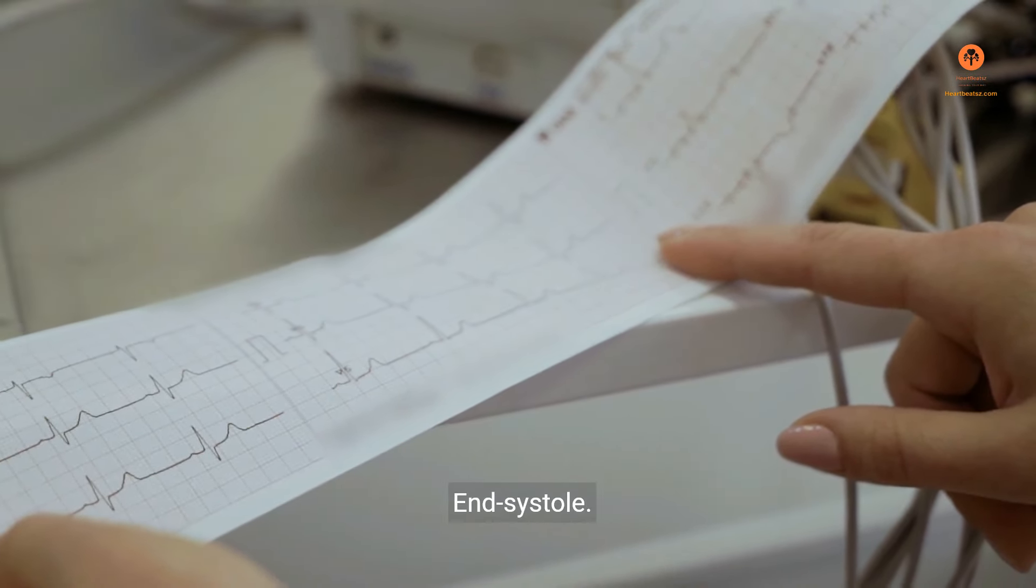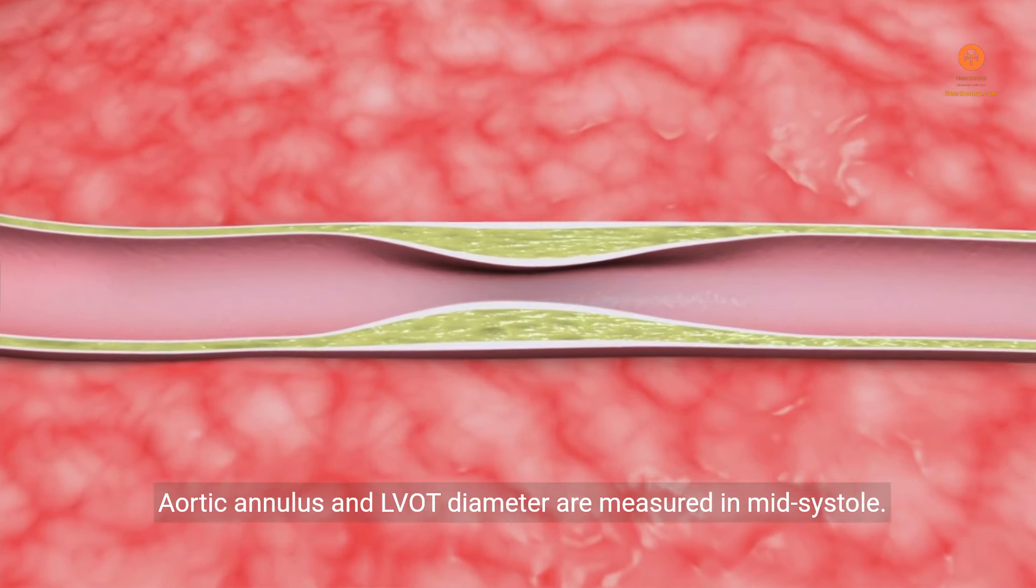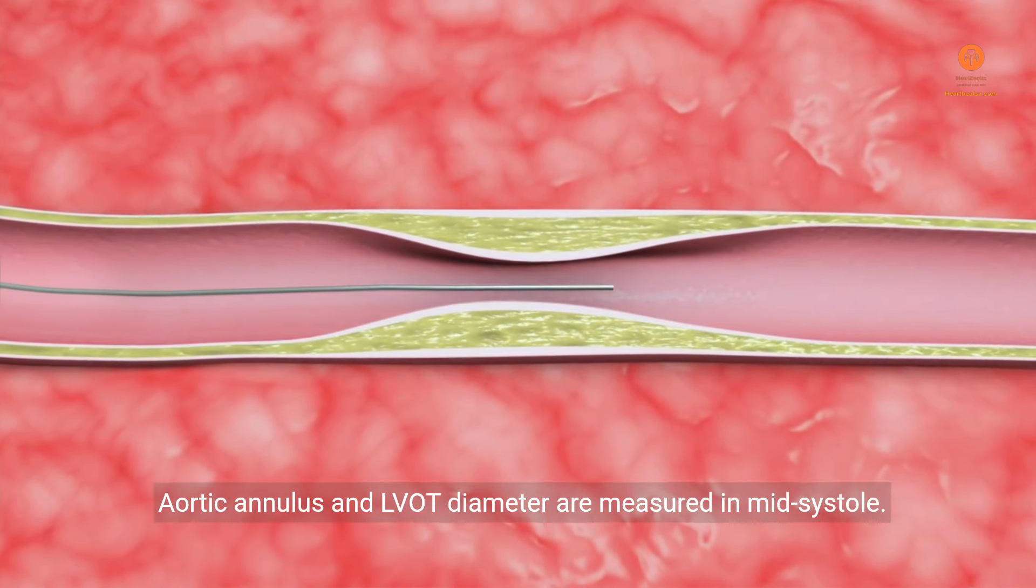LA is measured in end-systole. Aortic annulus and LVOT diameter are measured in mid-systole.